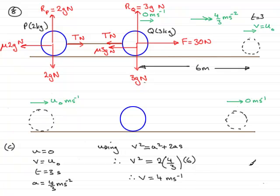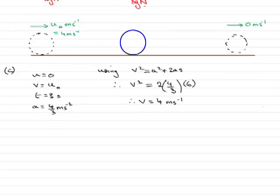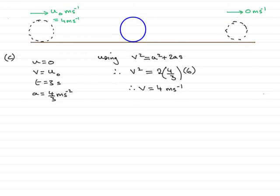So what I can do now is just update my diagram. And I now know that this starts here with a speed of four meters per second. And what I'm going to do is just move the diagram up, to give us a little bit more room to carry on the next part of the problem.